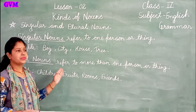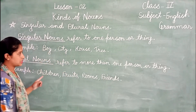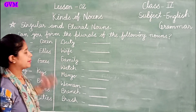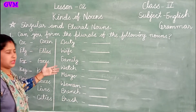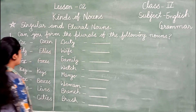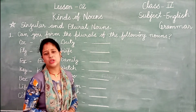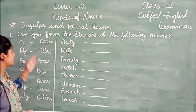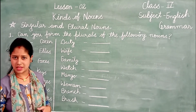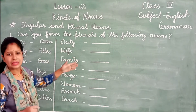Now let's look at this exercise. We know that a word can be singular or plural. We have seen singular and plural definitions. Now, can you form the plural of the following nouns? From class 1, we have been learning about plural and singular. When we make plural forms, we add -s, -es, or -ies.